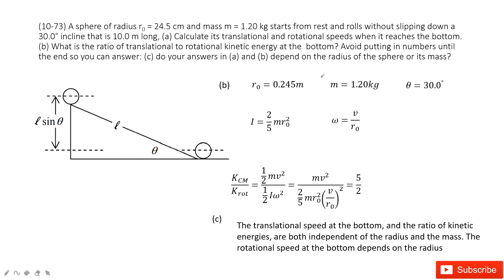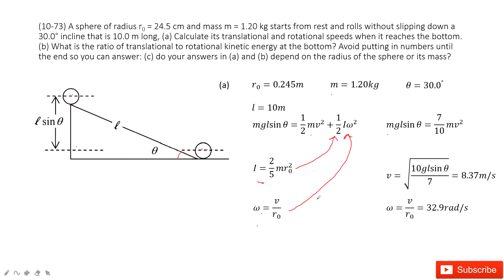The second part asks us to find the ratio of translational to rotational kinetic energy. The translational energy is ½mv² and rotational energy is ½Iω². We input what we got previously.